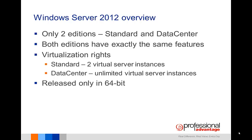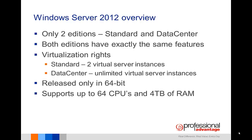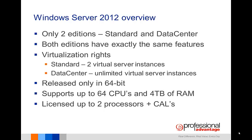Windows Server 2012 has only been released in 64-bit and both editions can support up to 64 physical CPUs and up to 4TB of memory. In terms of licensing, both editions are licensed for up to two processes and client access licenses or CALs are still required for every user or device accessing Windows Server 2012.